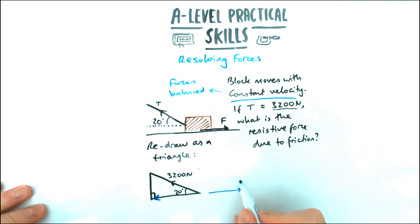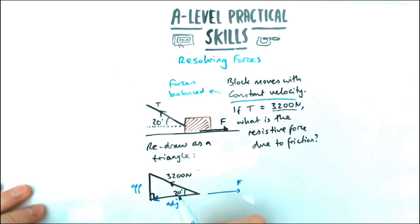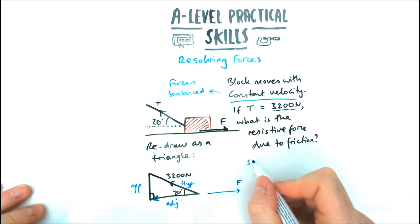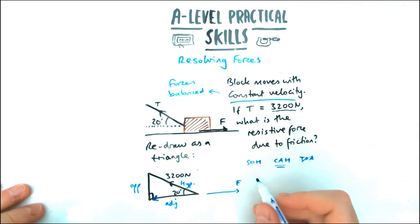Because it's a constant velocity, that means it has to be balanced out by the force in the left horizontal direction. Let's find out what that is. That happens to be my adjacent side of my right-angled triangle. If it's adjacent, we're going to use cos, cos of Sokotoa.